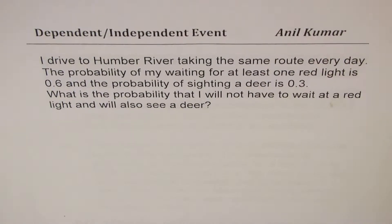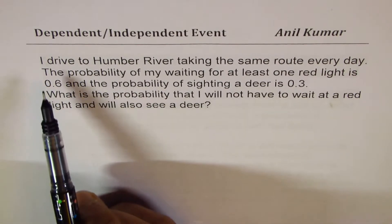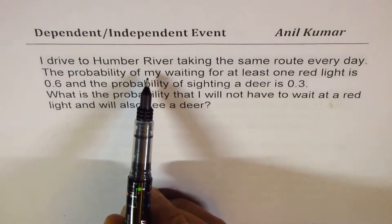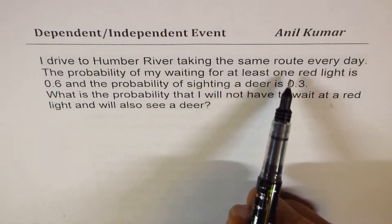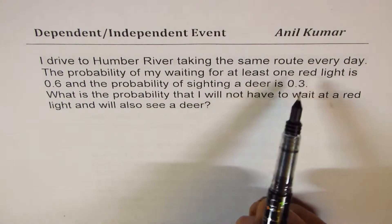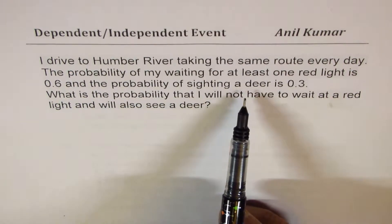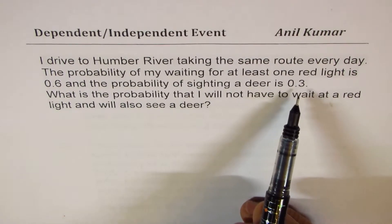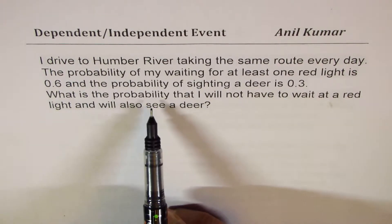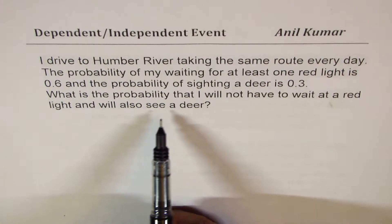I'm Anil Kumar sharing with you another example on finding probability of dependent or independent events. The question here is: I drive to Humbert River taking the same route every day. The probability of my waiting for at least one red light is 0.6, and the probability of sighting a deer is 0.3. What is the probability that I will not have to wait at a red light and will also see a deer?